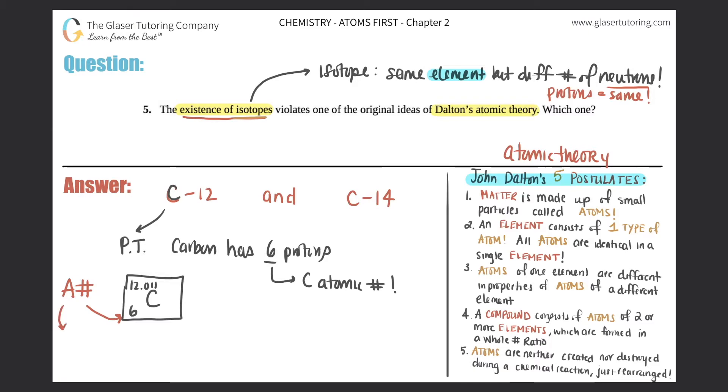So just know that the whole numbers are always going to be your atomic number. I'll just put a number, atomic number. This is always the number of protons. All right, so for C-12 and C-14, we know that the protons are going to be six because six is the atomic number. It's always the number of protons.